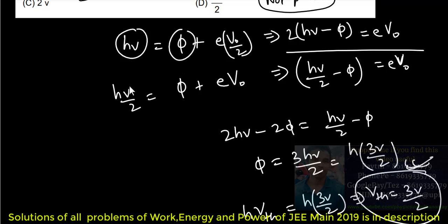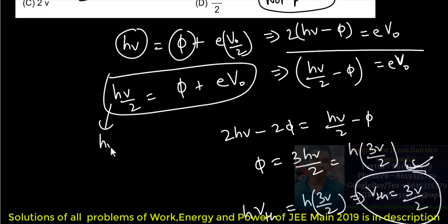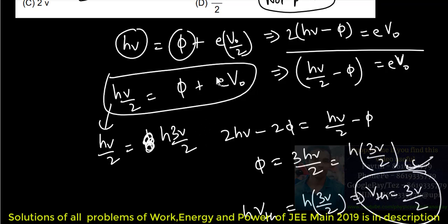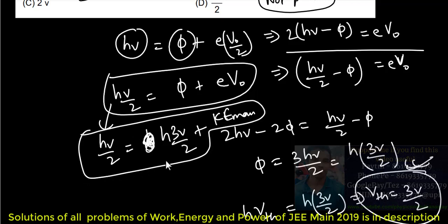The energy of the photon is positive, the work function is positive, and e times V0 — all quantities are positive. Work function equals h times threshold frequency. Now looking at this equation, KE_max comes out to be negative, which is impossible.